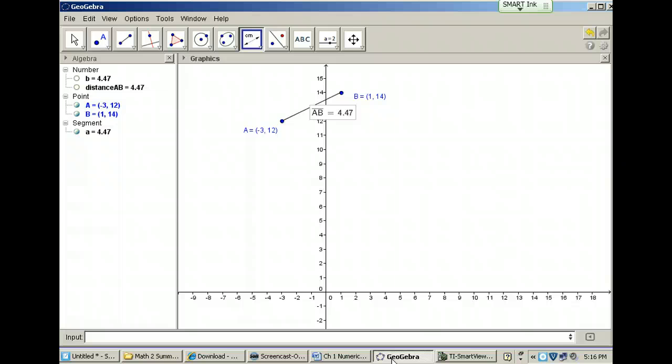and b is at 1 comma 14. I used my measuring tool on this program and found that the distance between a and b is 4.47. So hopefully when I apply the distance formula, I will get this same answer.